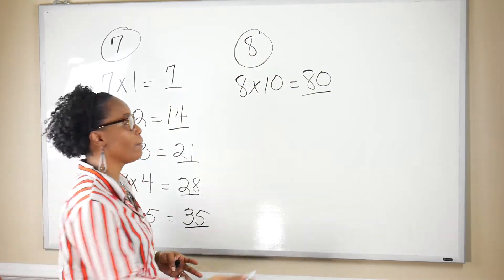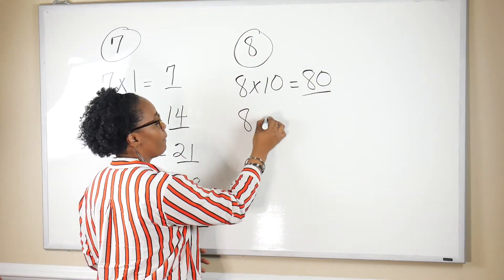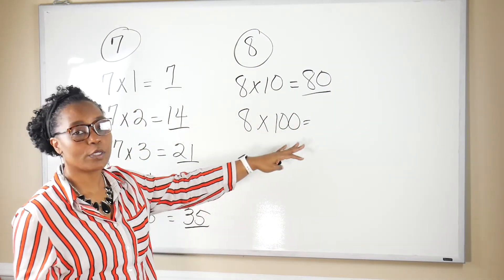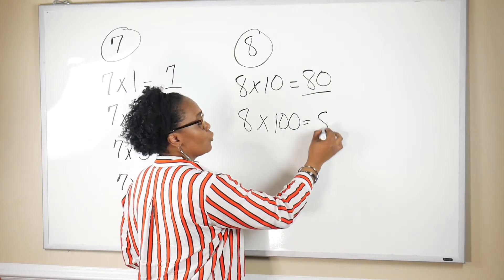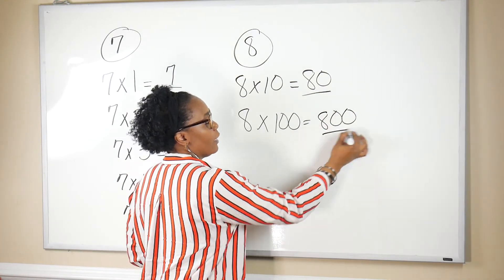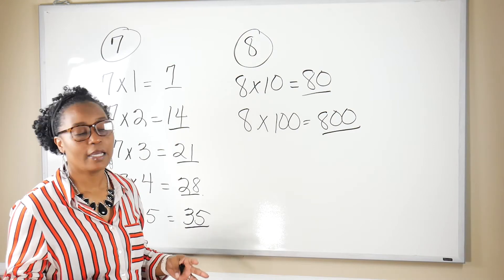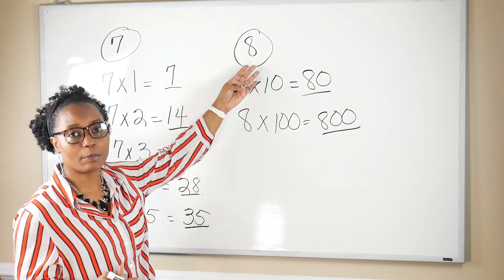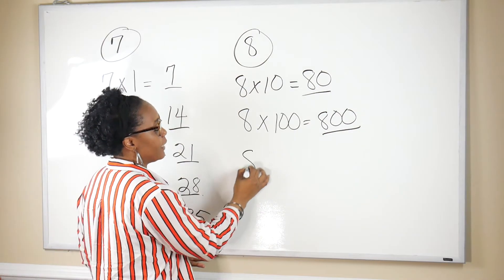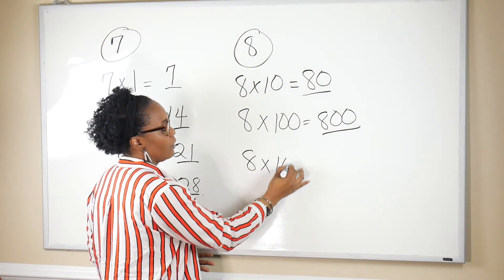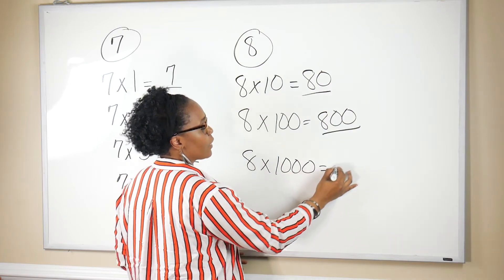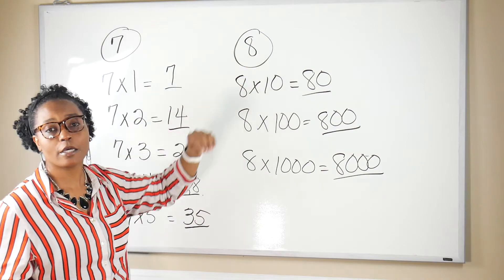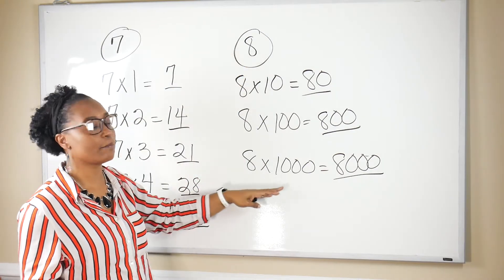Again, you find the multiple by multiplying the given number by any number. So if I multiply eight times 100, I get 800 and 800 will be a multiple of eight, and it will go on infinitely. You just multiply the given number times any number. If I wanted to multiply eight times a thousand, I get 8,000 and 8,000 is a multiple of eight because we multiplied eight times 1,000.